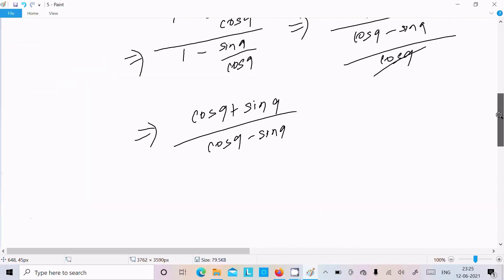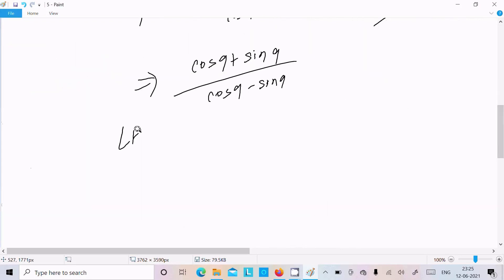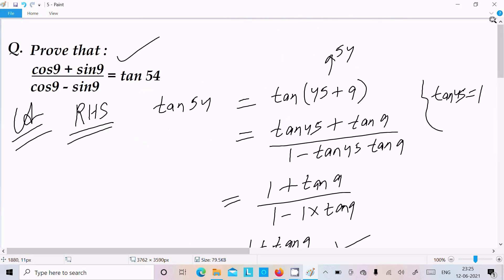So you can write LHS equals RHS, it's a proof. One more time going to repeat, by taking RHS we can easily and easy way to prove. So take the tan54.